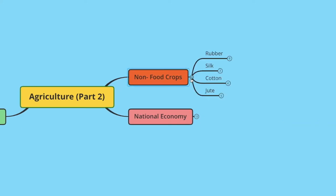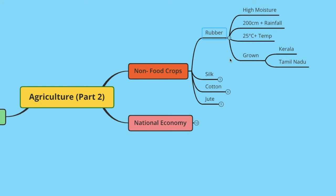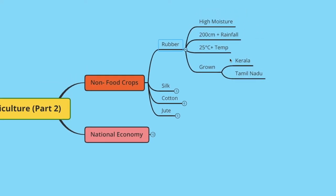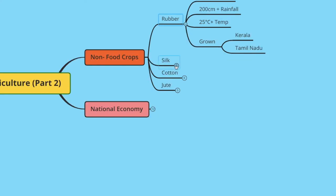Let's look at the different conditions these crops require for good growth. Rubber requires high moisture — about 200 centimeters plus rainfall, 25 degrees plus temperature — and is usually grown in Kerala and Tamil Nadu. We get silk from silkworms, and the rearing of silkworms is called sericulture.